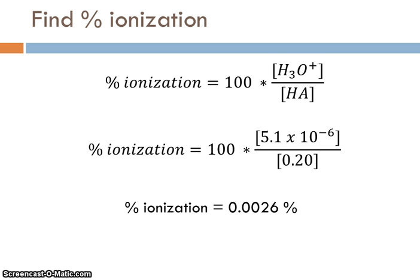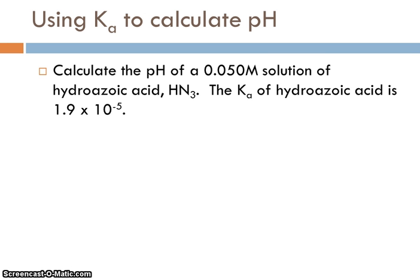Okay. So we've done our first problem. All right, let's go on and do a second problem, where we're given the Ka value, and we want to find the pH of the solution. So here's the problem. Calculate the pH of a 0.050 molar solution of hydrozoic acid, HN3, and we're given a Ka value of 1.9 times 10 to the minus 5th.